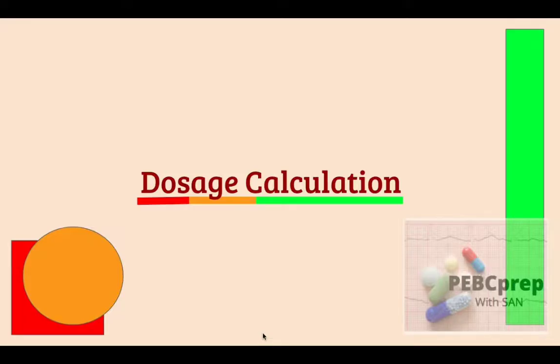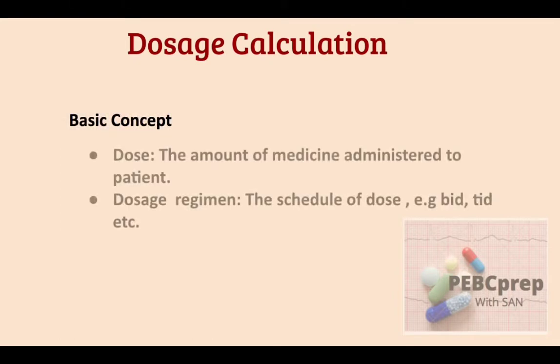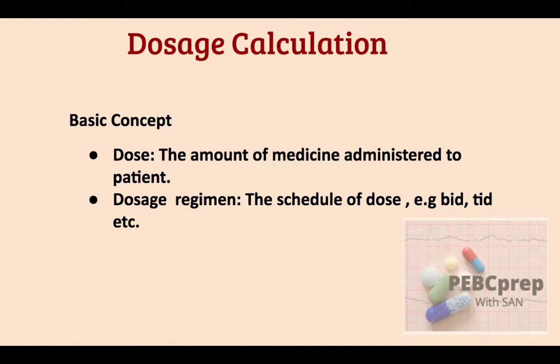Hello friends, today we will talk about dosage calculations. First we have to clear our basic concepts. In my initial days of pharmacy, I always confused dose and dosage. Dose is the amount of medicine administered or injected to the patient, while dosage regimen is the schedule of the dose — for example, two times a day, three times a day, or once a day.